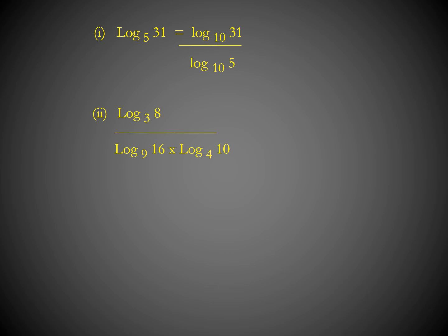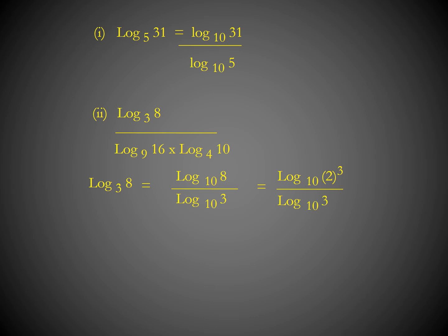For the second part, log 8 to the base 3 can be written as log 8 to the base 10 divided by log 3 to the base 10. Now 8 can be written as 2³, so this becomes log 2³ base 10 divided by log 3 base 10, which equals 3 log 2 to the base 10 divided by log 3 to the base 10.